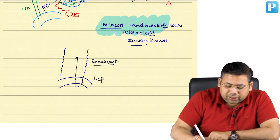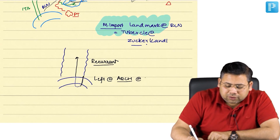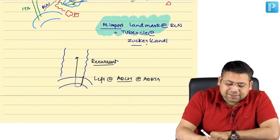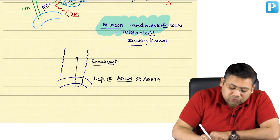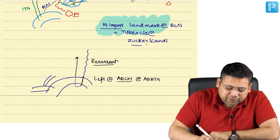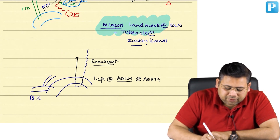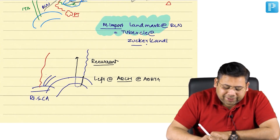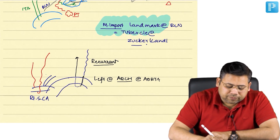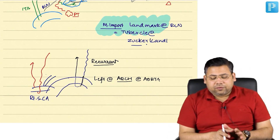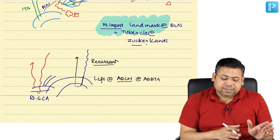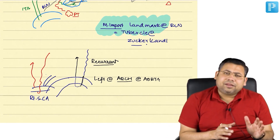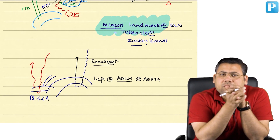On the left side, they arch around the arch of aorta. On the right side, the branch arches around the right subclavian artery. They then move up into the tracheoesophageal groove.